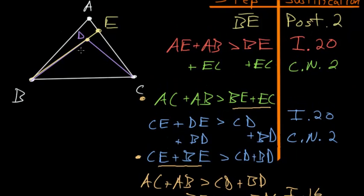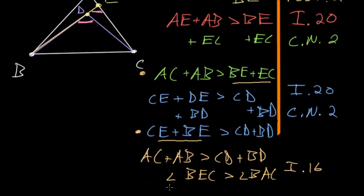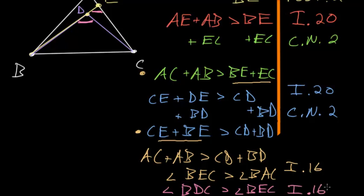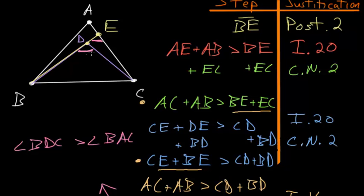We'll again use Book 1 Proposition 16 to show that angle BDC, since it's exterior to this triangle, is bigger than angle BEC. So: angle BDC is bigger than angle BEC, again due to Book 1 Proposition 16. Since BDC is bigger than BEC, and BEC is bigger than BAC, we now conclude that angle BDC is bigger than angle BAC. This is the other item we sought to prove, so let's end this proof with QED.